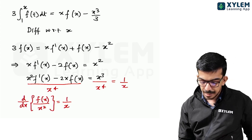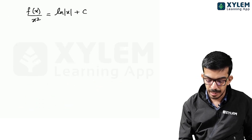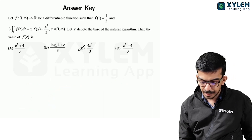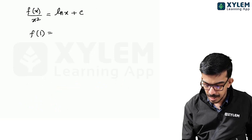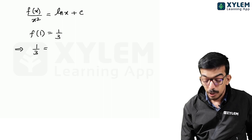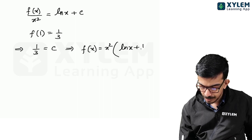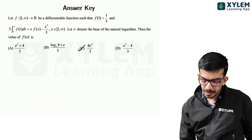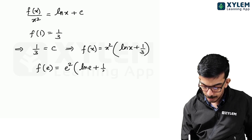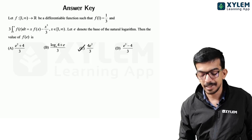Integrating both sides: f(x)/x² = log x + C. Applying the initial condition f(1) = 1/3: 1/3 = log 1 + C, so C = 1/3. Therefore f(x) = x²(log x + 1/3). Thus f(e) = e²(log e + 1/3) = e²(1 + 1/3) = 4e²/3. It's very simple and straightforward.